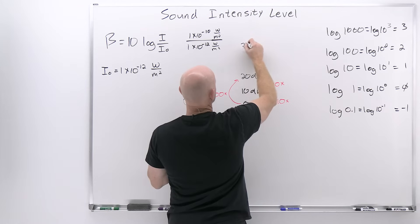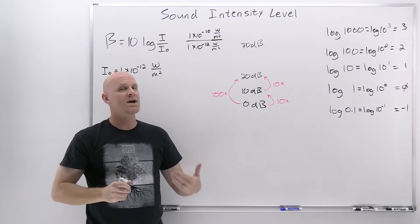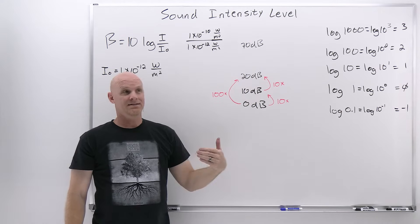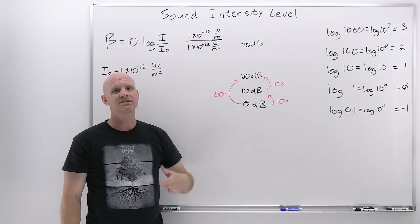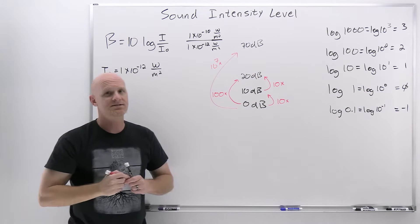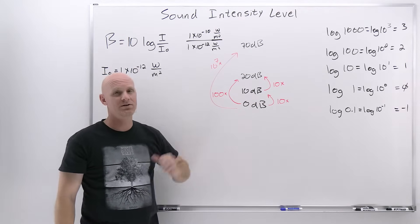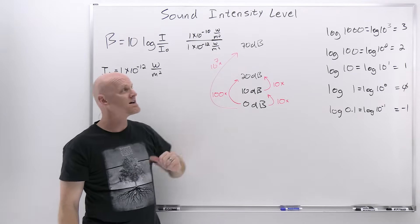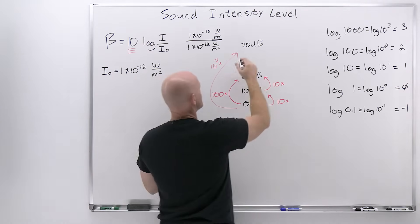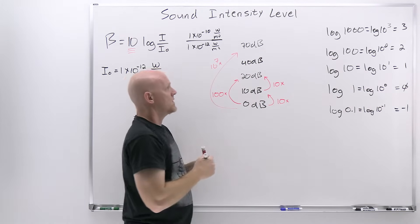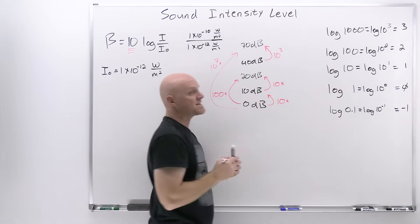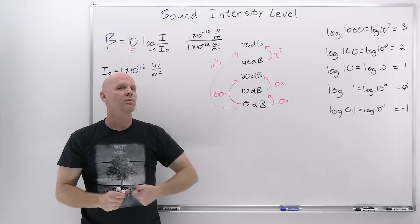If we go all the way up to 70 decibels, how much greater is the sound intensity at 70 dB compared to 0 dB? The difference is 70 decibels — that's 7 sets of 10 — so we're going to be 10 to the 7th times louder in sound intensity at 70 decibels compared to 0 decibels. Everything is in sets of 10 on this decibel scale, because of that factor of 10 in the equation. You don't have to compare to 0 either: comparing 70 dB to 40 dB is a 30-decibel difference — 3 sets of 10 — so 70 dB is 10³, or 1000 times louder. That's how a logarithmic scale works.